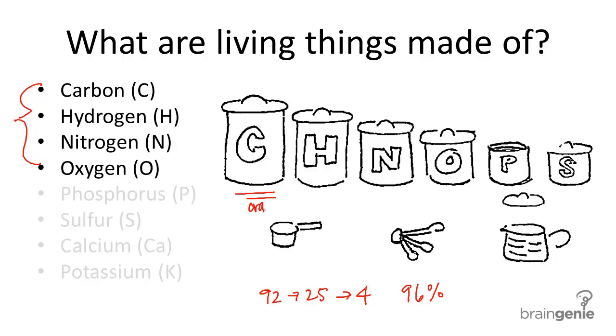And molecules containing carbon are called organic molecules. So the last 4% is made up of phosphorus, sulfur, calcium, potassium, and a few other elements.